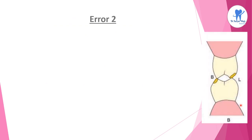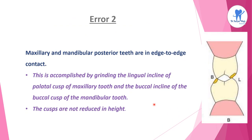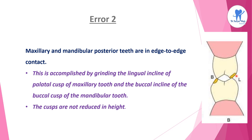Coming to Error 2: maxillary and mandibular posterior teeth are in edge to edge contact. This is corrected by grinding the lingual incline of the palatal cusp of the maxillary tooth and the buccal incline of the buccal cusp of the mandibular tooth. The cusps are not reduced in height.